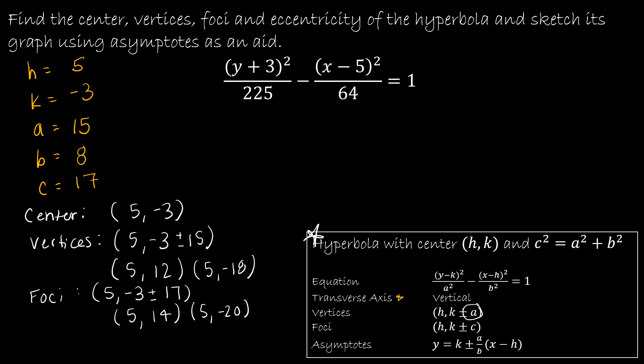And then the last is the asymptotes. And the asymptotes are equations of lines. And those are the ones that you're probably not going to see on the graph. But if you're asked to graph it, you need to have the asymptotes. Otherwise, it's going to be really difficult. So we've got Y is equal to K, which is negative 3, plus or minus A over B, and then X minus H, which is 5.